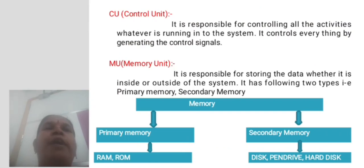CU - Control Unit. It is responsible for controlling all the activities running in the system. It controls everything by generating control signals.